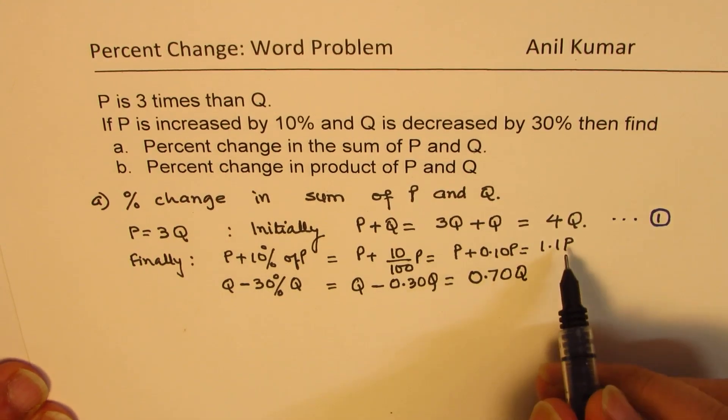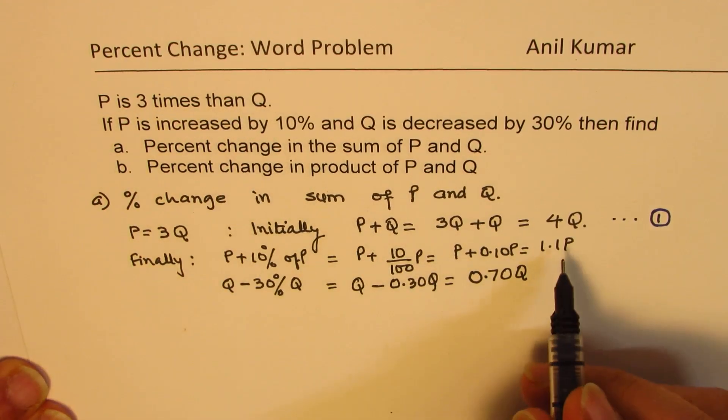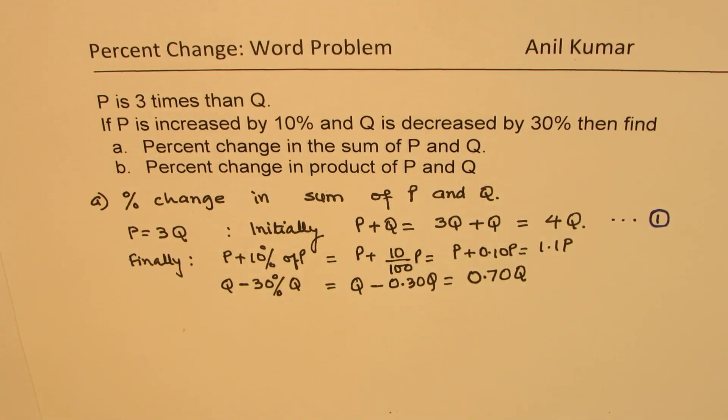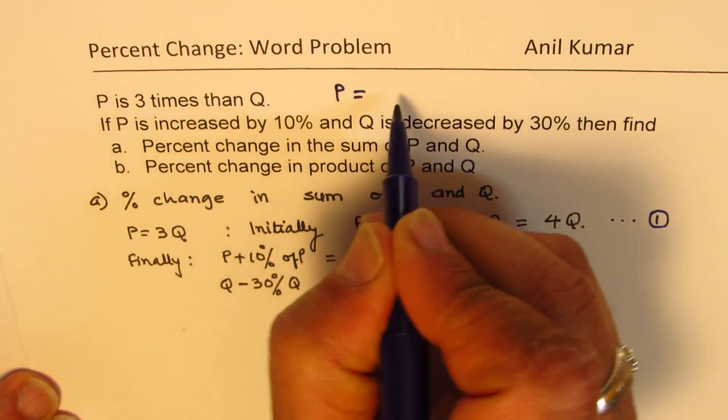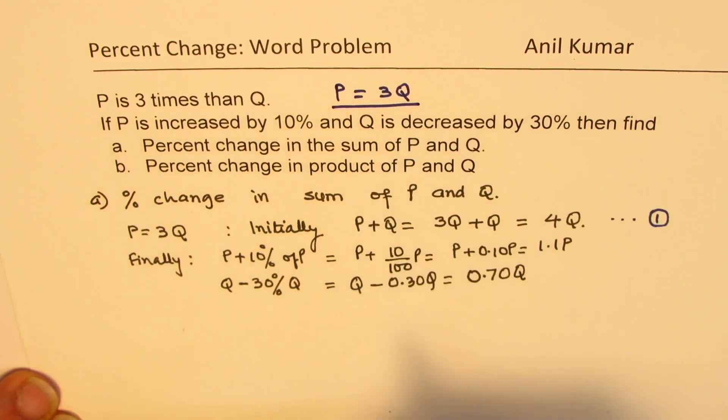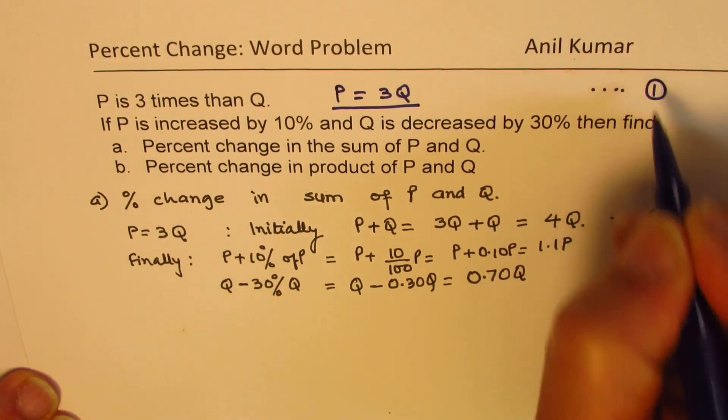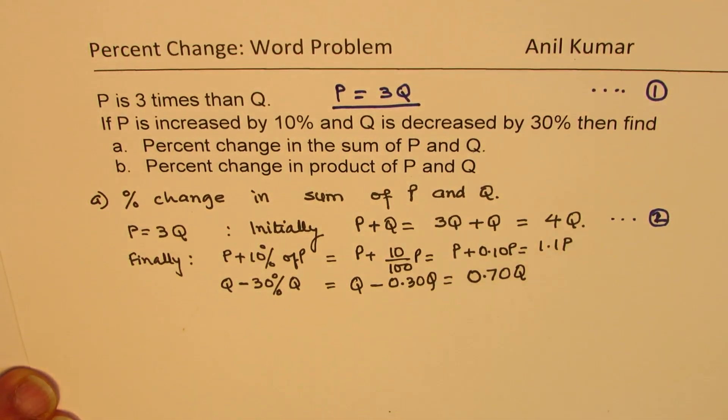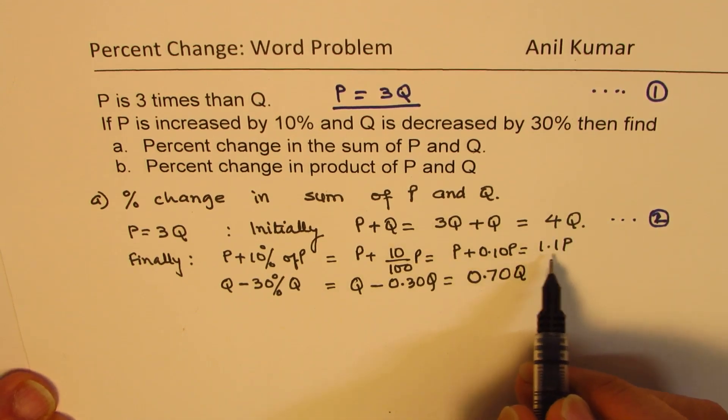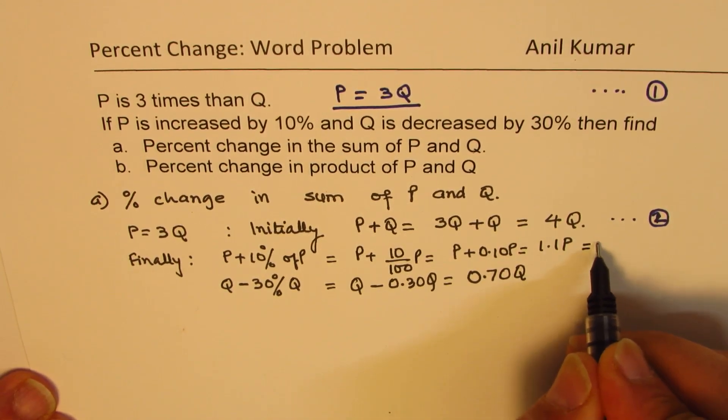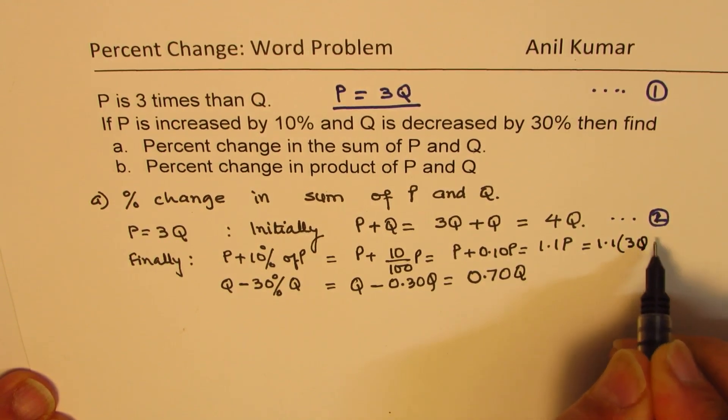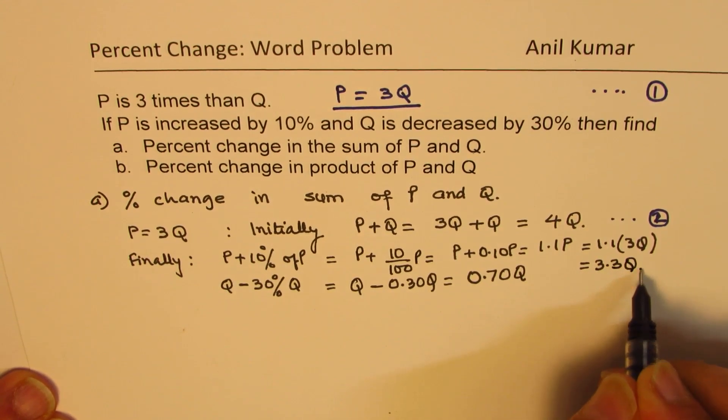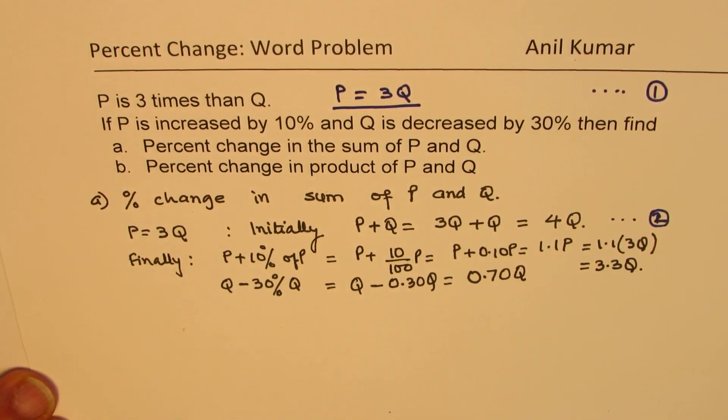Now, since we know P is 3 times Q, I can always replace P with Q, since we have this condition already given as P equals to 3Q. That is the condition given to us. In fact, I should call this as my equation number 1. I will call that as 2. So we will use 1 in this place. And then say, 1.1 P is same as 1.1 times 3Q or is equal to 3.3Q. So we have got both the terms in terms of Q.